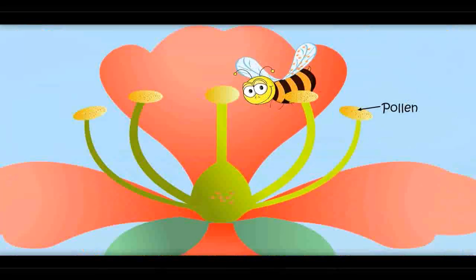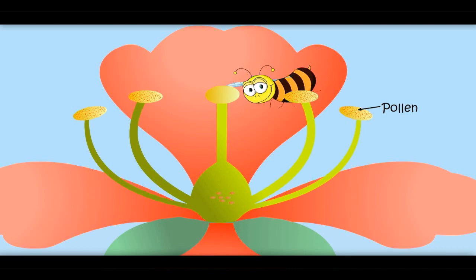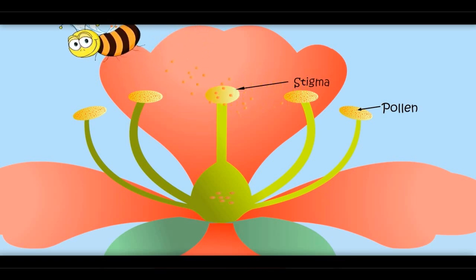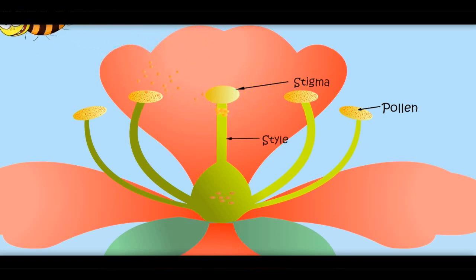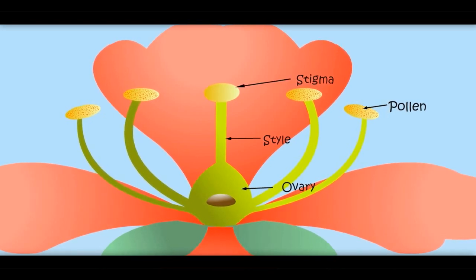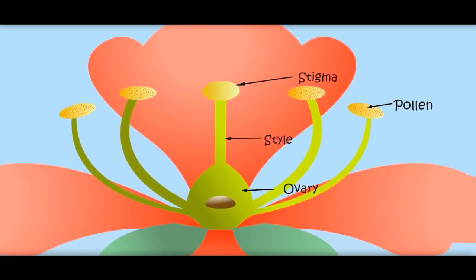What is pollen? These are powder-like things. They get stuck to insects' wings, and then pollen falls on the stigma. From stigma, it goes into the style. From there, it enters the ovary where there are small eggs. Pollen and eggs combine together to make fruit. This process is called pollination. Pollen entering the ovary is called pollination, and fruits and seeds are made because of this.